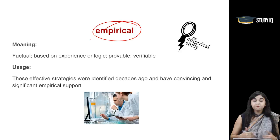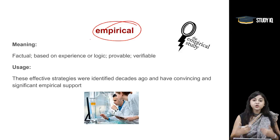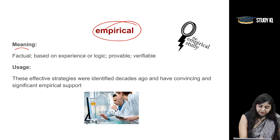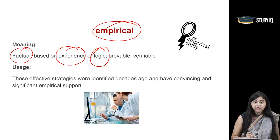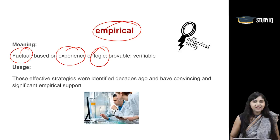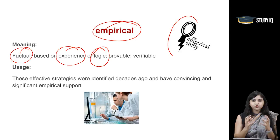Moving on to the next word: empirical. Empirical shabd ka arth hota hai factual. Aap jab koi chiz ko observe karte hai, tabhi aap usse believe karte hai. So, empirical is factual, something that is based on experience, something that is based on logic. Koi aisi chiz jo verifiable hai, aap usse prove karte hai — uske liye hum empirical shabd ka prayok karte hai. Aap achi tarah se microscope ke thru observe karte hai — koi chiz agar objective hai, factual hai, tab ham uske liye empirical shabd ka prayok kareenge.